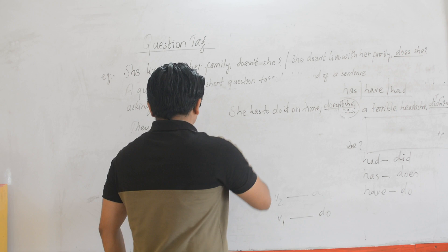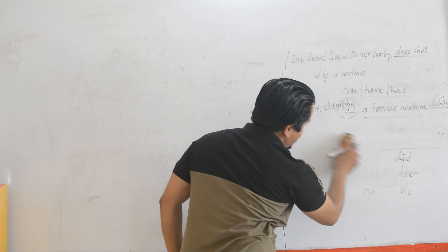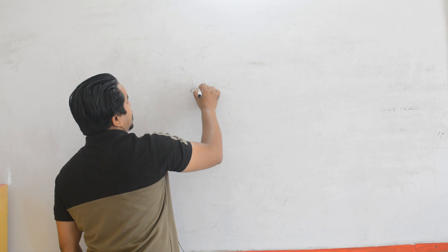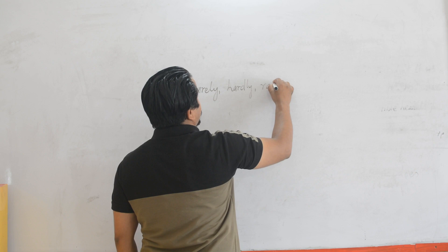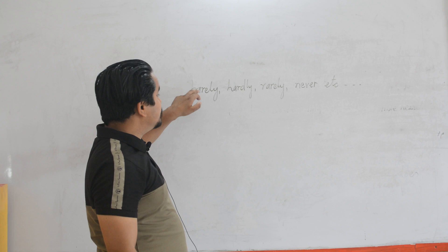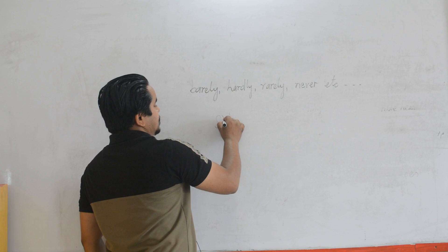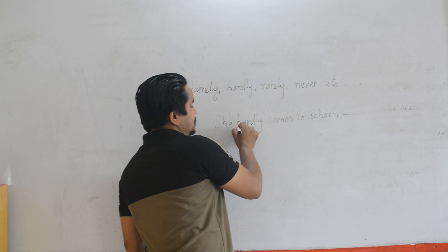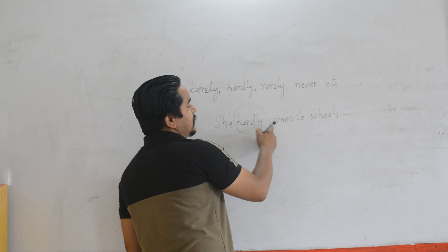Another important thing: if there come the words 'barely', 'hardly', 'rarely', 'never', etc., then the sentence becomes negative. The presence of these words in the sentence makes it negative. For example: 'She rarely comes to school.' The presence of 'rarely' makes the sentence negative, so we have to use an affirmative question tag. 'She rarely comes to school, does she?' This is what we insert here.